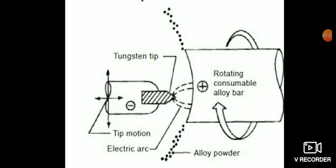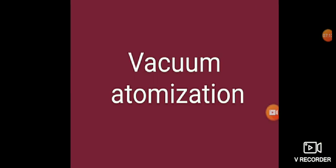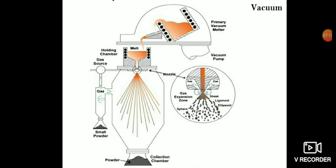Vacuum atomization: The vacuum or soluble gas atomization is a commercial batch process based on the principle that when a molten metal supersaturated with gas under pressure is suddenly exposed to vacuum, the gas expands, comes out of solution, and causes the liquid metal to be atomized.